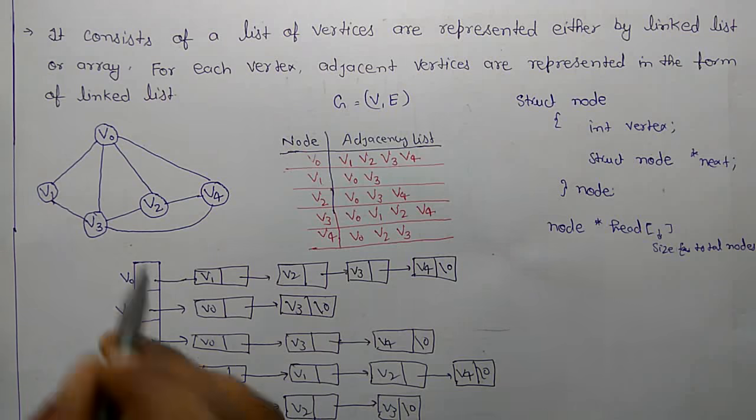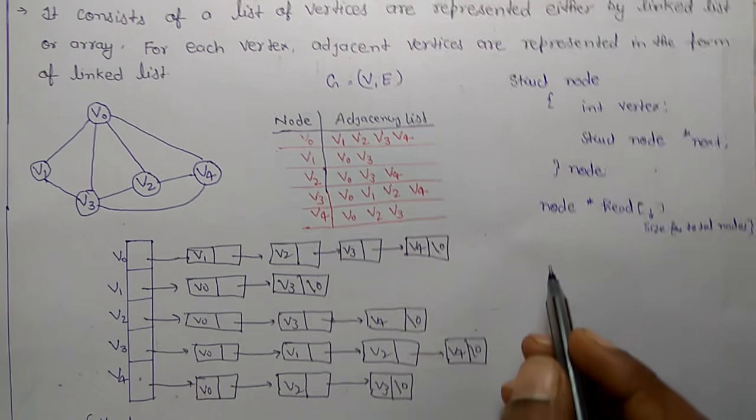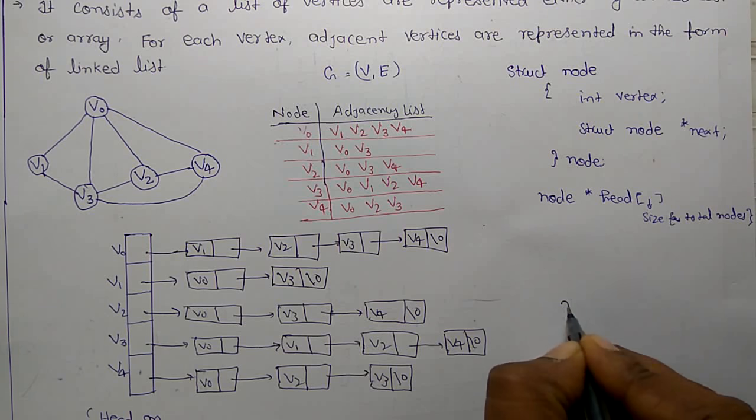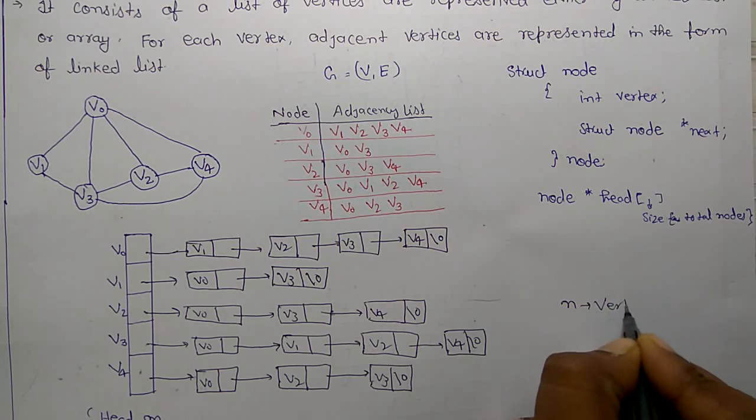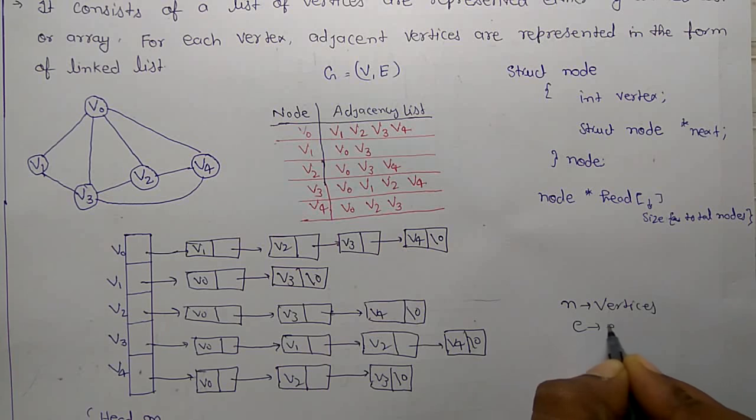For an undirected graph, if n vertices are there and e edges are there,